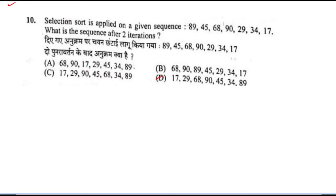Let's discuss the first question. What do you ask in this question? Selection sort is applied on a given sequence. What is the sequence after two iterations?